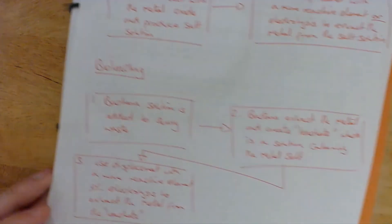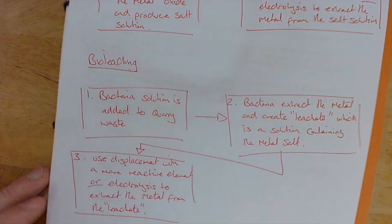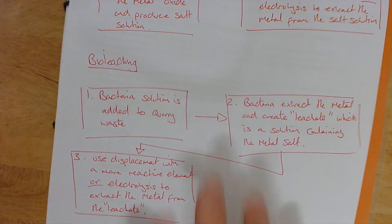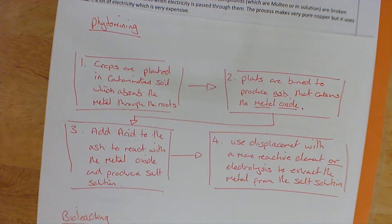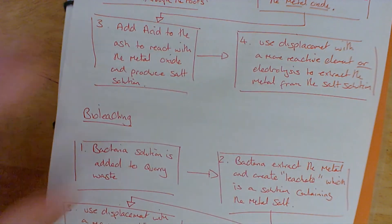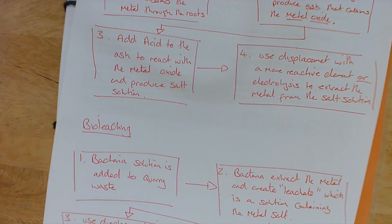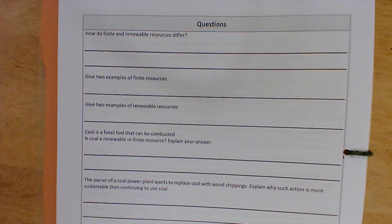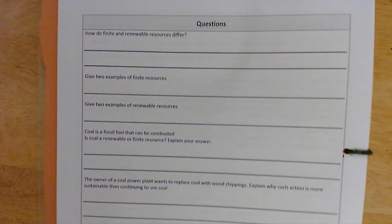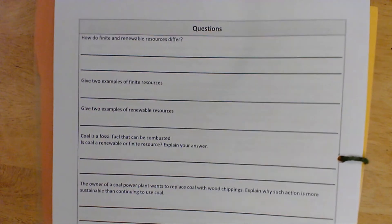What they will most likely ask you in an exam question is either to give a method for bioleaching, a method for phytomining, to compare phytomining to bioleaching, or to compare either of these to the more traditional methods such as the blast furnace or molten electrolysis. To finish off, we have two pages of exam questions, which should take approximately 15 minutes.